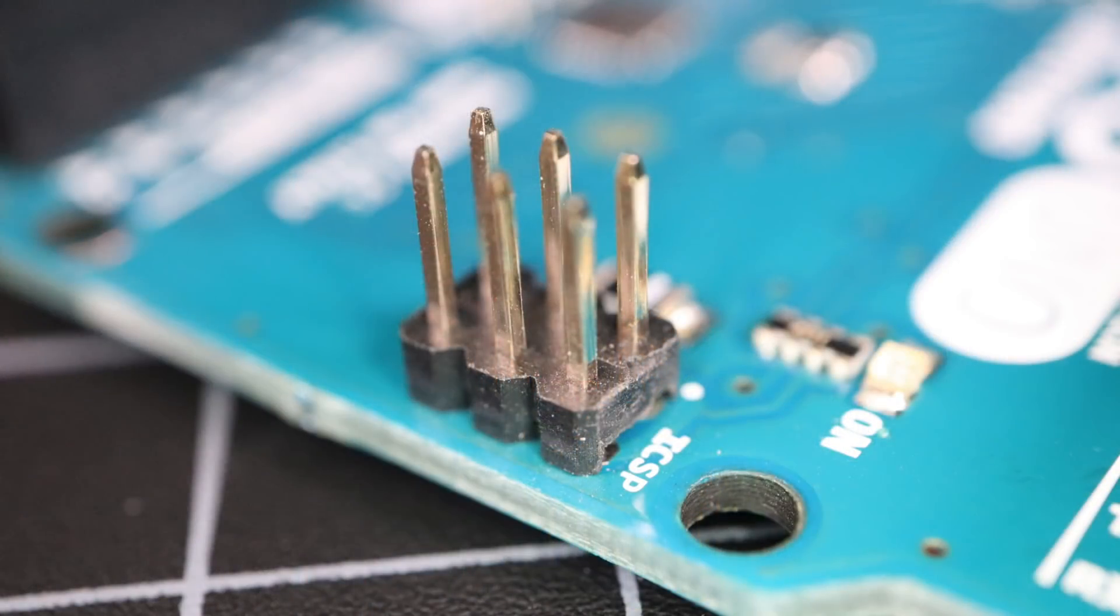Next up is the ICSP connector, or in-circuit serial programmer. This set of pins allows you to bypass all of the bootloaders and features of the IDE and program the Atmega microcontroller directly. This is handy for reprogramming a corrupted Arduino or for bulk programming on production assembly lines.